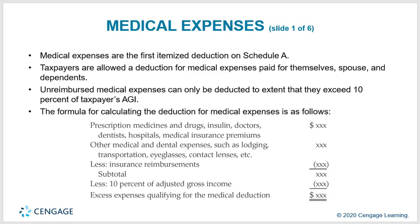The formula for calculating the medical expense deduction starts with prescriptions, medicine, drugs, insulin, doctors, dentists, hospital fees, and medical insurance premiums. Add other medical and dental expenses such as lodging, transportation, eyeglasses, and contact lenses. Subtract insurance reimbursements to get a subtotal, then subtract 10% of adjusted gross income. The remainder is the excess expenses qualifying for the medical deduction.